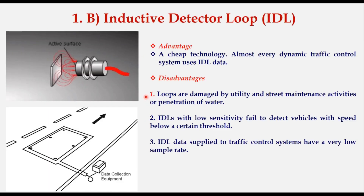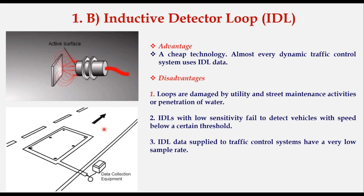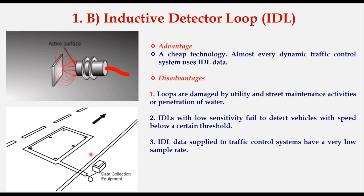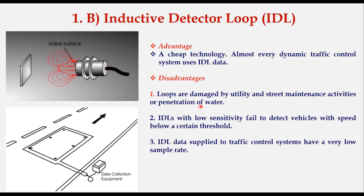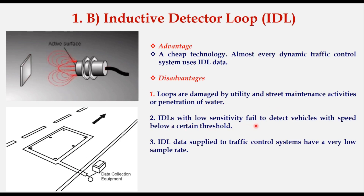The inductive detector loop works like a metal detector and measures change in the field when an object passes over it. Once a vehicle drives over a loop sensor, the loop field changes, which allows detection of the vehicle by the detection device. This is an established technology and almost every dynamic traffic control system uses it. However, the disadvantages are that loops are damaged by utility and street maintenance activities, loops with low sensitivity fail to detect vehicles with speed below a certain threshold, and the data supplied to the traffic control system have a very low sample rate.